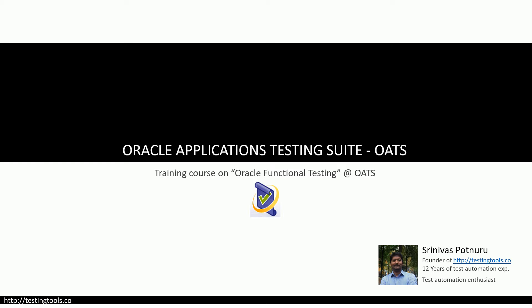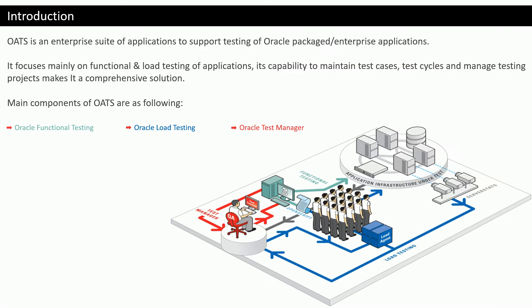Before we go deep into the course, I would like to give a brief overview on what is OATS. It is an enterprise suite of applications to support testing of Oracle packaged applications. It is focused mainly on functional test automation and load testing, and in addition it has the capability of creating test cases, maintaining them, and test cycles. You can execute both manual and automation test cases, so it's like a comprehensive solution for the entire testing lifecycle.